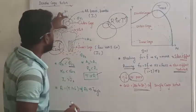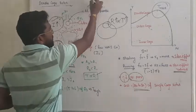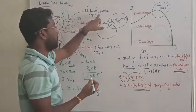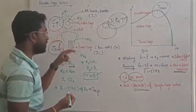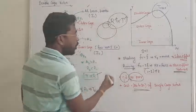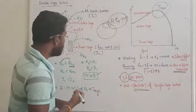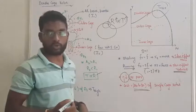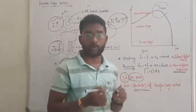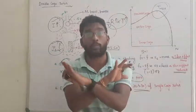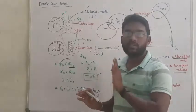So that is all about double cage rotor construction. Here the outer cage, for high resistance, we are using special type of materials like aluminum brass or brass. We are using low resistance copper conductors for inner cage. That's all, this is all about double cage rotors.